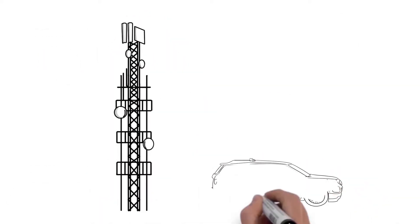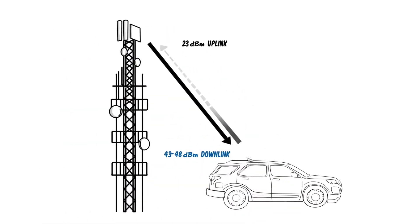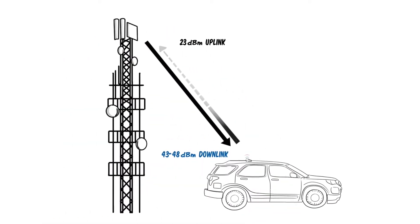The uplink signal is the weakest link in the cellular connection, which can be problematic in fringe coverage areas or inside buildings.